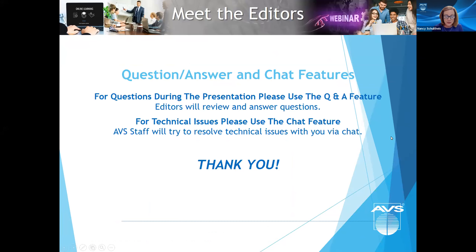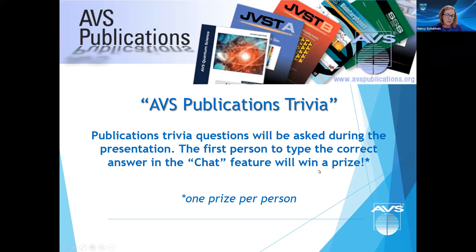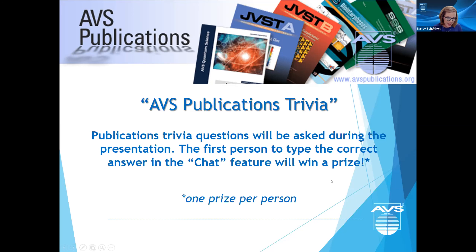For questions during the presentation, please use the Q&A feature and we will be able to answer your questions through that. There's also a chat feature, and we'll be using that for the journal trivia. As we welcome your questions for the editors, we will also ask a few questions of the participants today in our journal trivia game. If you would like to enter an answer to a journal trivia question, please plan to enter your answer using the chat box. Your chat feature is set to be seen by hosts and panelists — this is the best setting when entering your answer. We'll be able to see who enters the correct answer first. Please notice the slide says one prize per person.